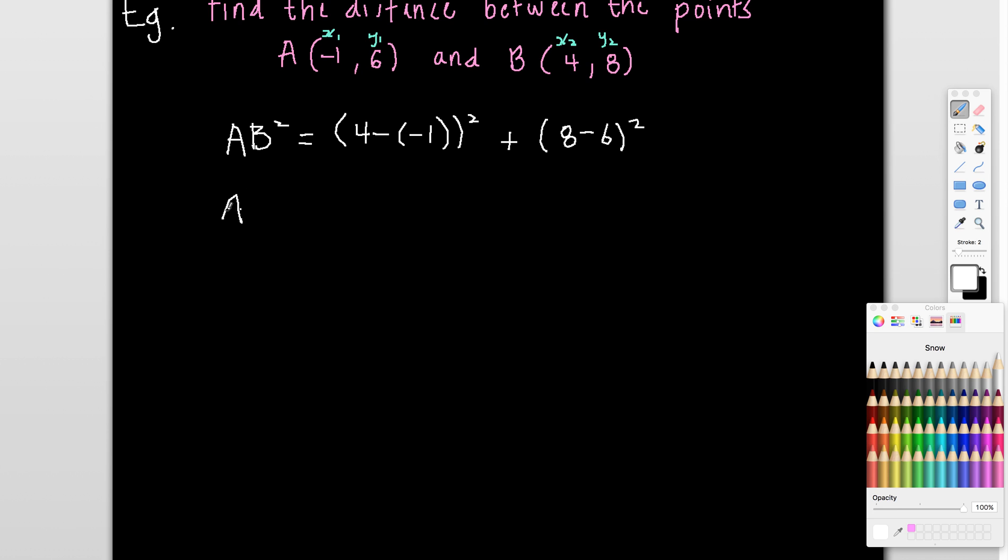So this is going to be 4 minus negative 1 is 4 plus 1. So that's going to be 5 squared. And then 8 minus 6 is 2. So 2 squared. So that's going to be 25 plus 4. So AB squared is 29. That means that, just say therefore, AB. I've got to take the square root of both sides. So root 29. From there, if you get a surd result like this, you want to make sure you simplify it. But this one's not going to simplify any further. If you do need to approximate it, you need a calculator to do that. So you can approximate it. And this one's 5.39. But I'm just going to leave it as is. That's my distance between my two points there. So root 29.